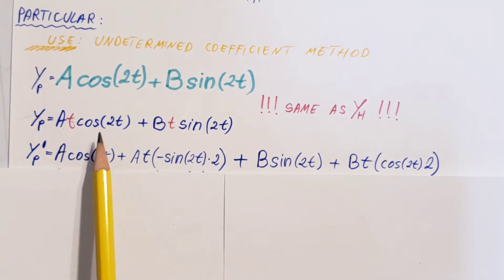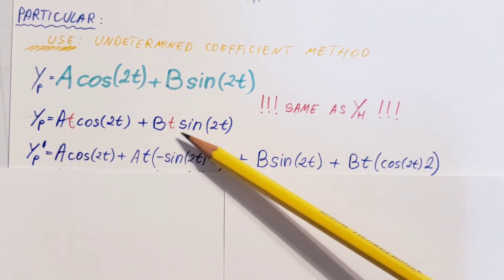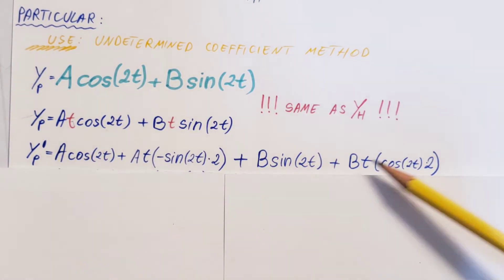Cosine 2t. Cosine 2t plus a t negative sine 2t times 2. Here you're gonna do the chain rule with the sine. And these two. They are exact same process for these two.